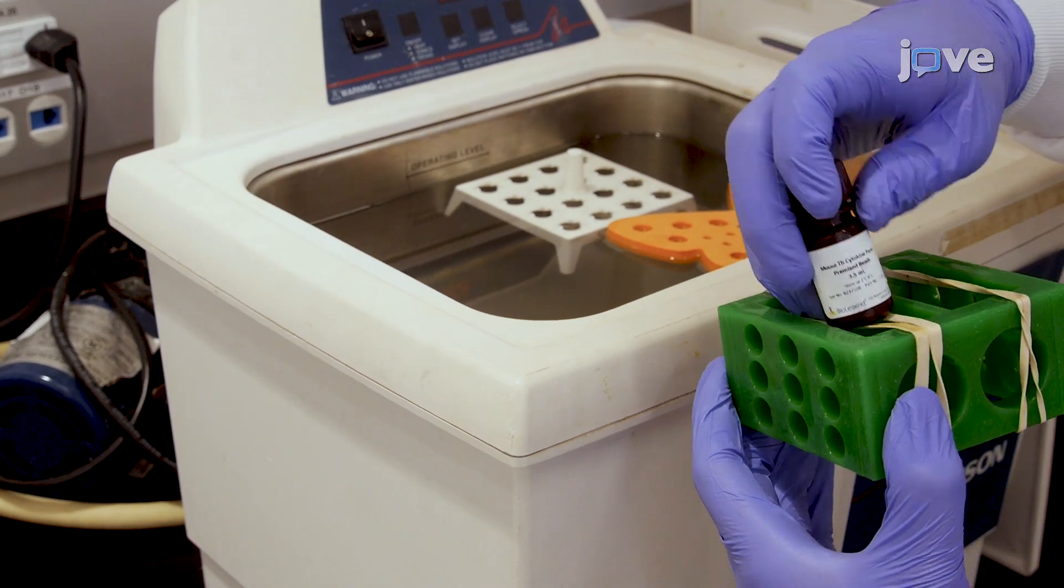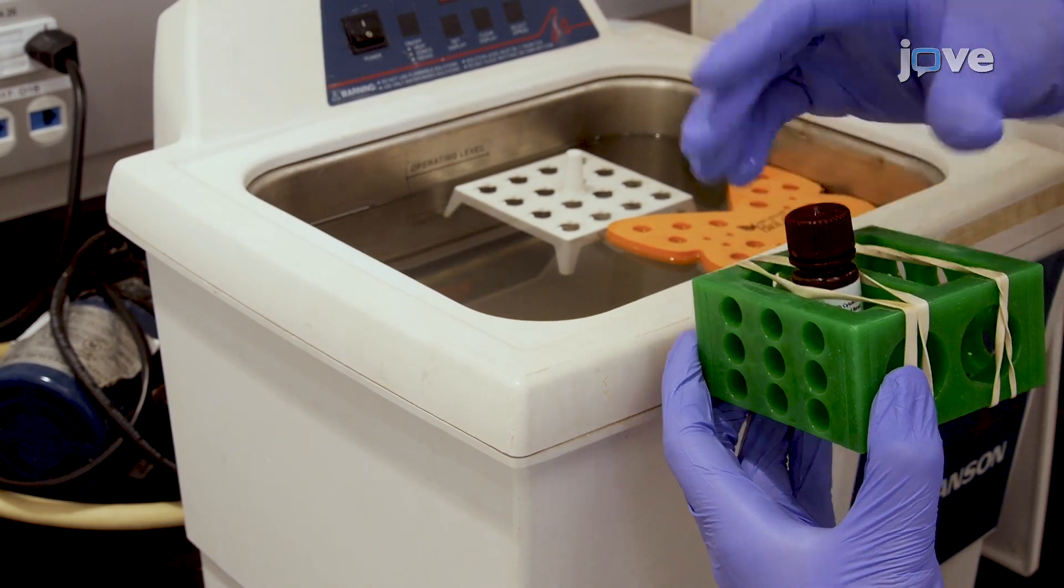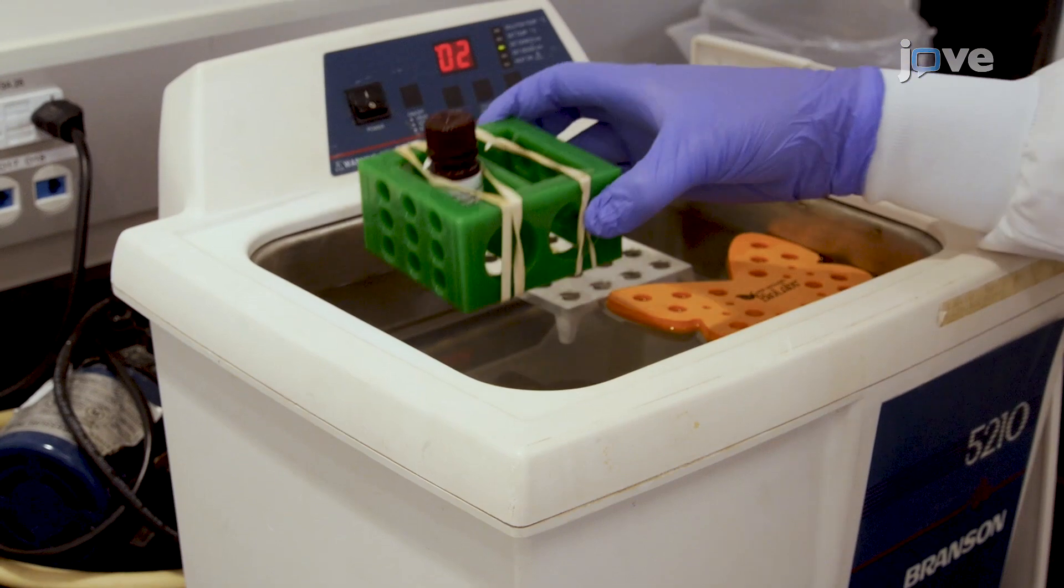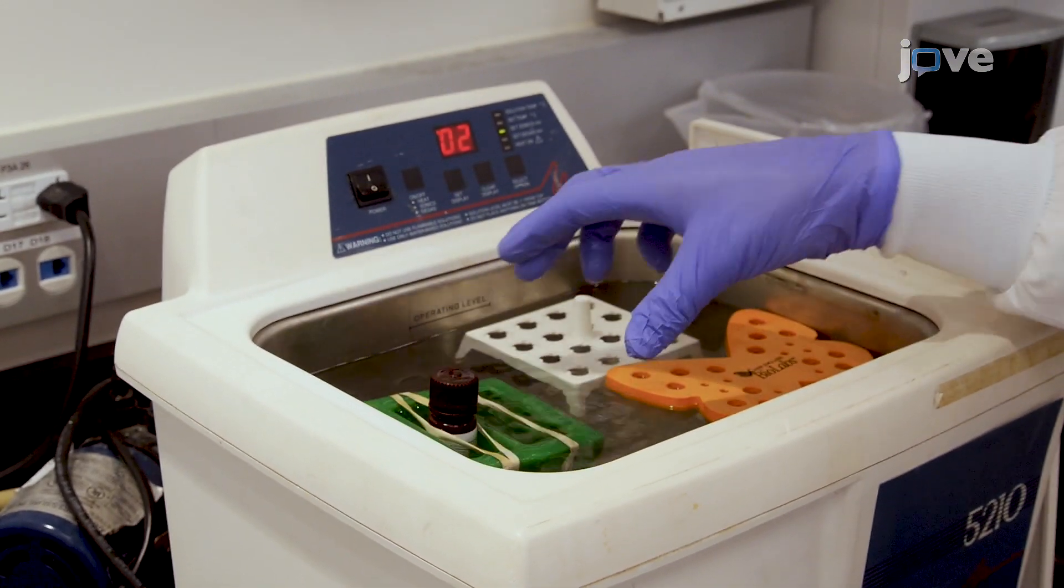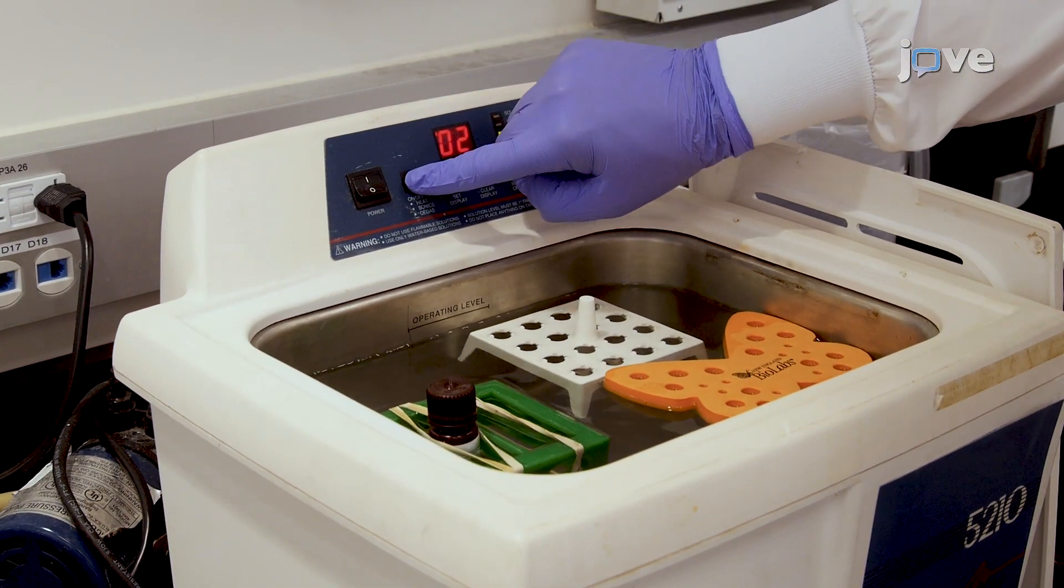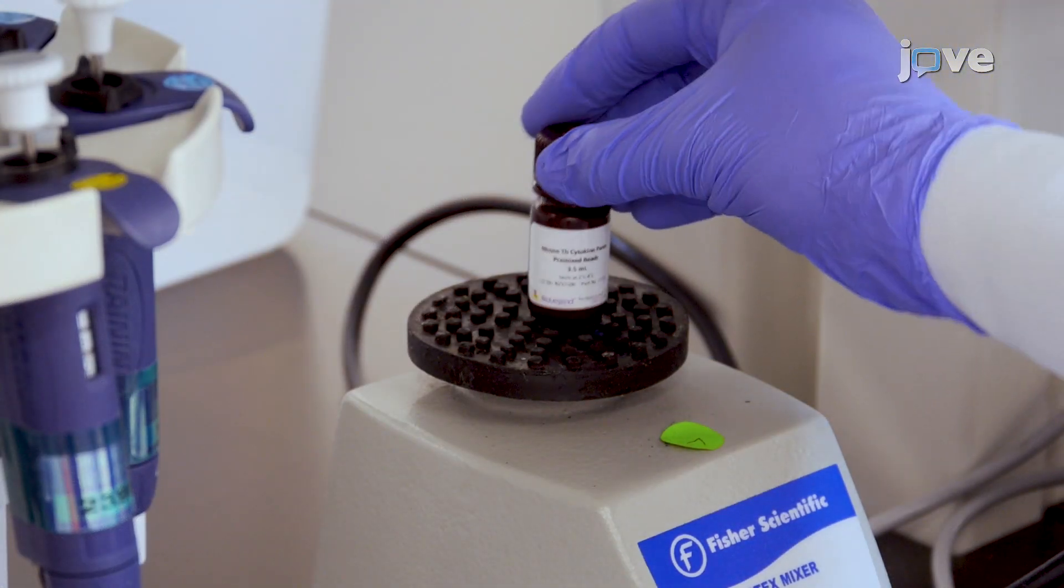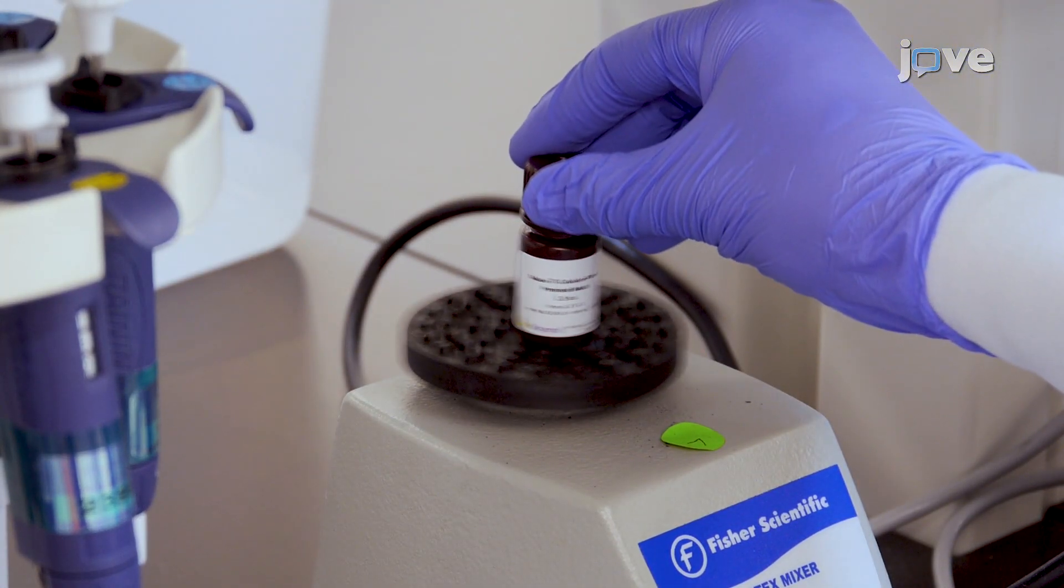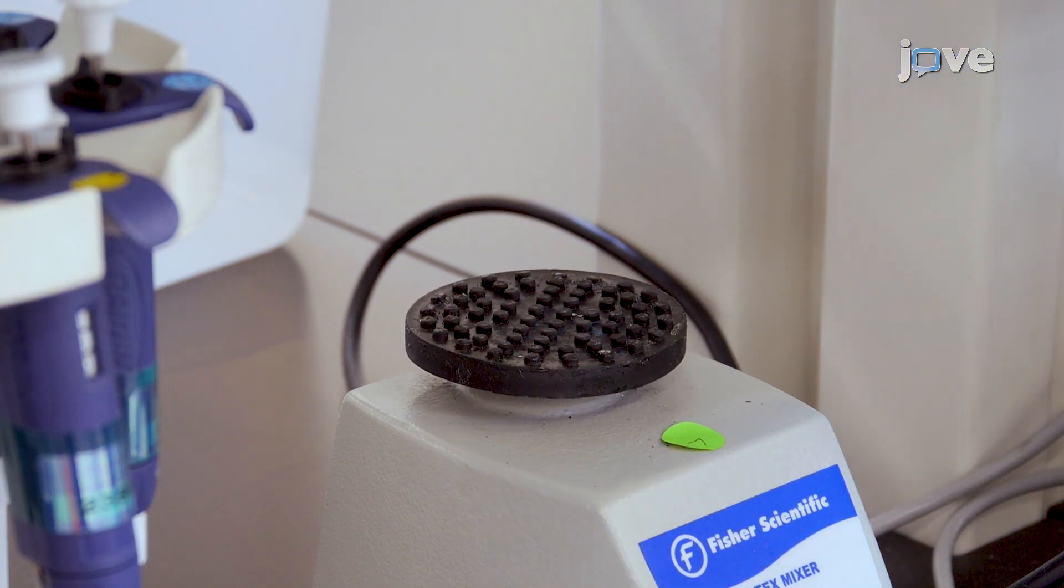To prepare the premixed antibody-immobilized beads, sonicate the premixed beads bottle for one minute in a sonicator bath at room temperature, then vortex for 30 seconds prior to use. If no sonicator bath is available, increase the vortex time to one minute.